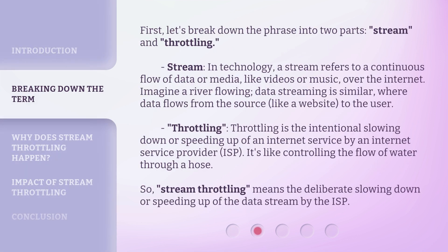First, let's break down the phrase into two parts: stream and throttling. Stream. In technology, a stream refers to a continuous flow of data or media, like videos or music, over the internet. Imagine a river flowing. Data streaming is similar, where data flows from the source, like a website, to the user.